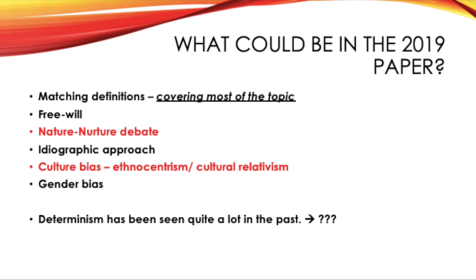There could also be a question on free will. Free will is the opposite of determinism and the most obvious example of free will is shown by the humanistic approach. Free will suggests that we are free to choose our own actions. Within a question you may be asked to evaluate the free will stance, giving examples — your humanistic approach would be very good for this — or there may be a question where you have to contrast free will with determinism, which would almost be like a comparison question from paper two with the approaches.